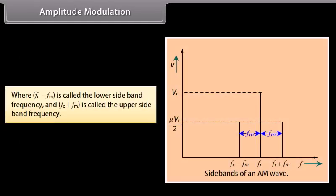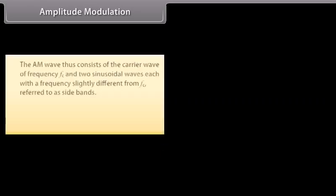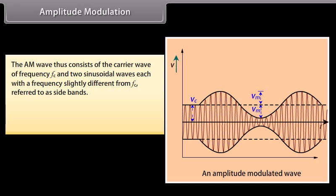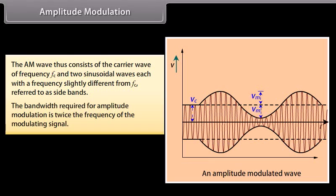Here, (Vc − Vm) is called the lower sideband frequency and (Vc + Vm) is called the upper sideband frequency. The AM wave thus consists of the carrier wave of frequency Vc and two sinusoidal waves, each with a frequency slightly different from Vc, referred to as sidebands. The bandwidth required for amplitude modulation is twice the frequency of the modulating signal.